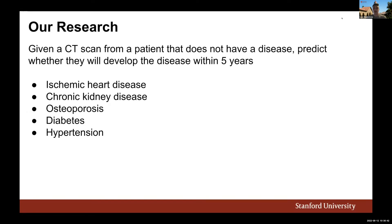For this work, given a CT scan from a patient who does not yet have a disease, we want to predict whether they will develop it within five years. We were interested in doing this for ischemic heart disease, chronic kidney disease, osteoporosis, diabetes, and hypertension — diseases we hypothesized would be predictable from CT and for which actionable interventions exist.